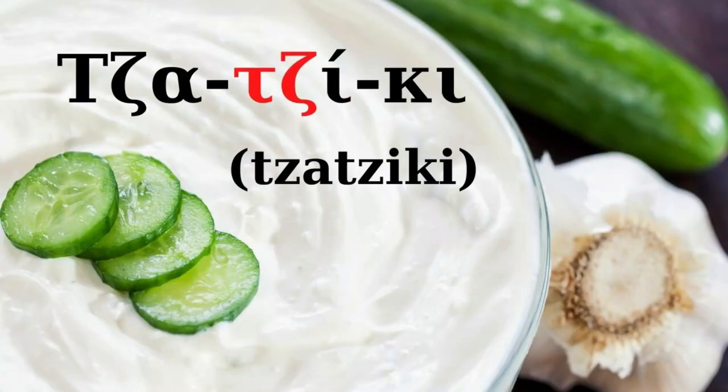The second rule: two consonants between two vowels are spelled together with the second vowel, on the condition that a Greek word begins with those two consonants. Let's see the example.